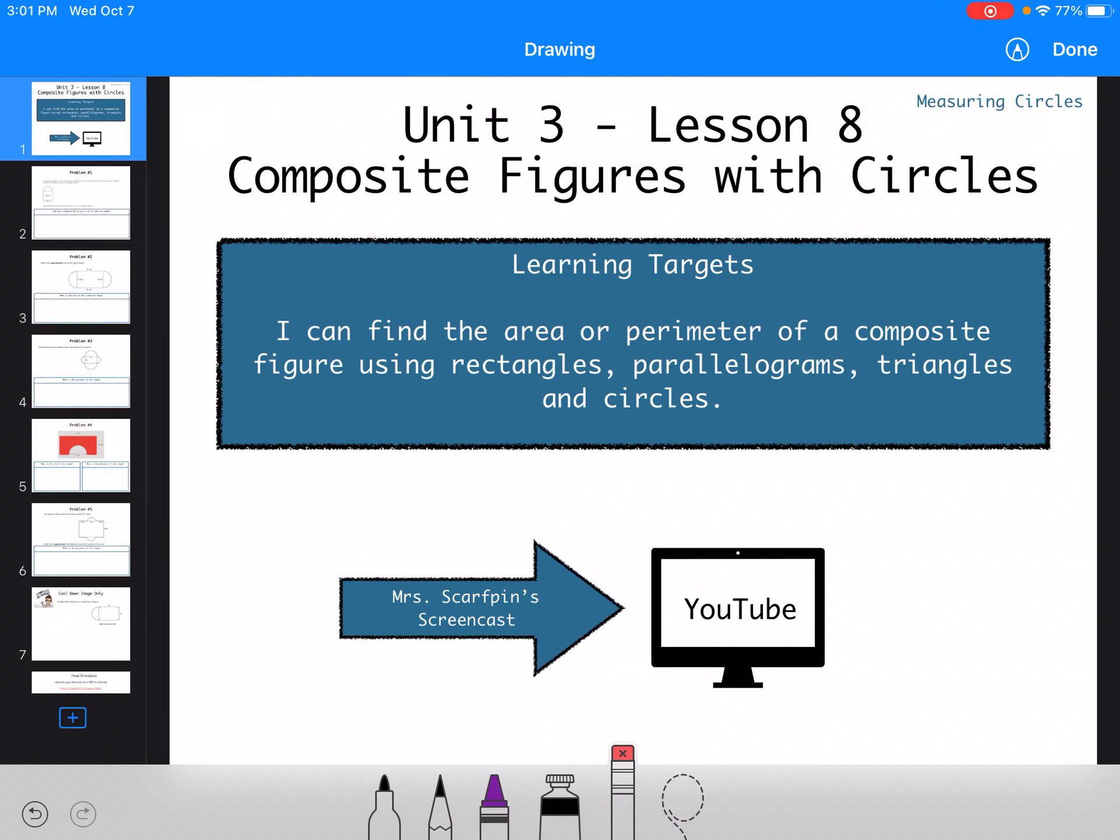I can find the area and perimeter of composite shapes using rectangles, parallelograms, triangles, and circles.